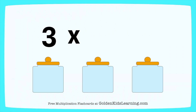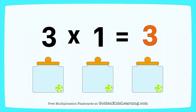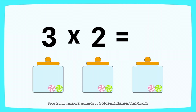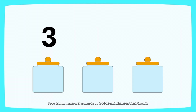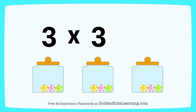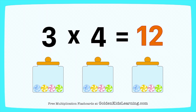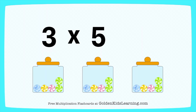3 times 1 equals 3. 3 times 2 equals 6. 3 times 3 equals 9. 3 times 4 equals 12. 3 times 5 equals 15.